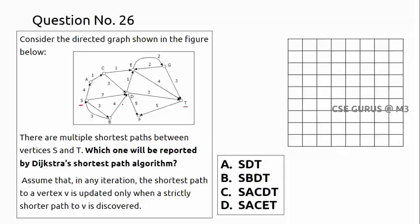Let's check the options. Path S-D-T: 7 plus 3 = 10. Path S-B-D-T: 3 plus 4 plus 3 = 10. Path S-A-C-D-T: 4 plus 1 plus 3 plus 3 = 11. Path S-E-T: 6 plus 4 = 10. So option C (path length 11) is eliminated.